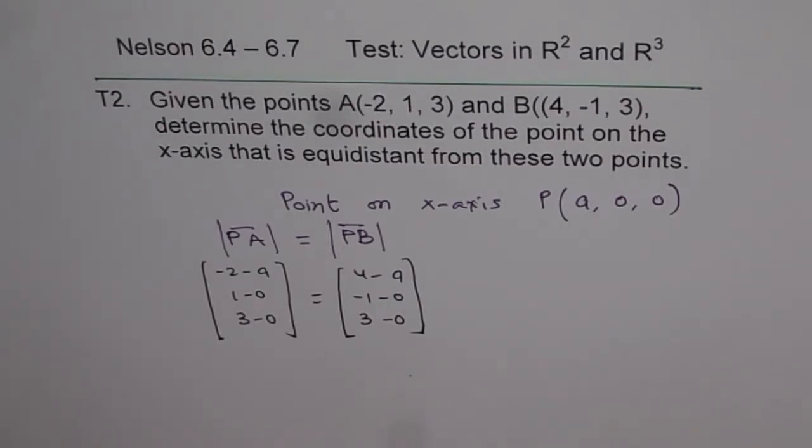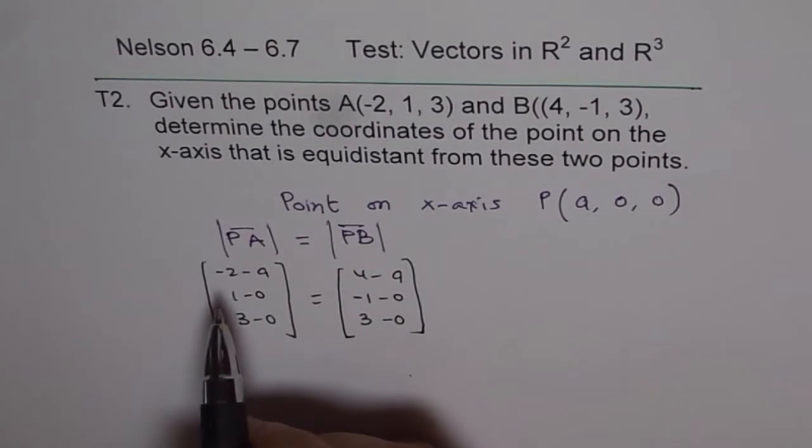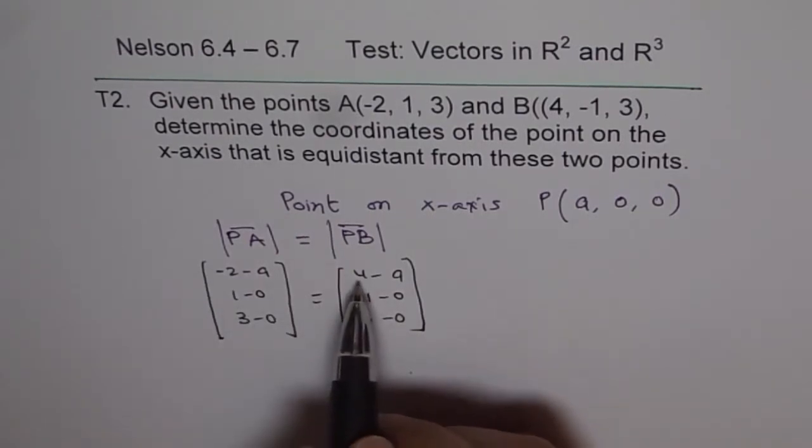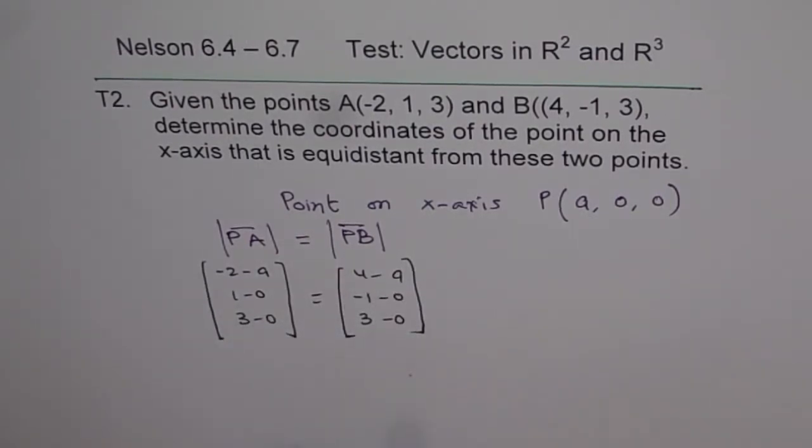Now, we can find these vectors and equate their magnitudes. Do you understand? So these are your vectors. So you get minus 2 minus A, 4 minus A. These are your vectors.